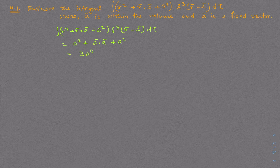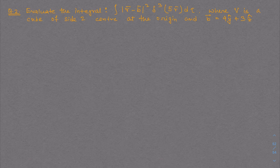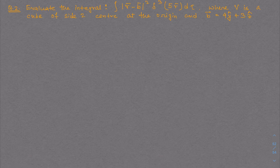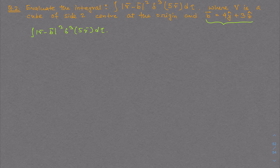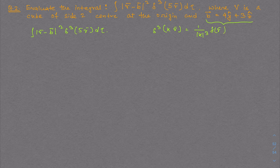Now let's solve the next problem. We have to evaluate the integral: |r - b|² δ³(5r) dτ, where v is a cube of side two centered at the origin and b is a given vector. We use the property of the delta function: δ³(kr) = (1 / |k|³) δ³(r).